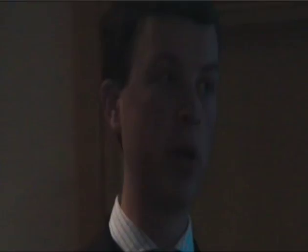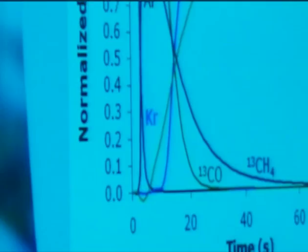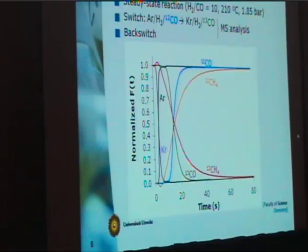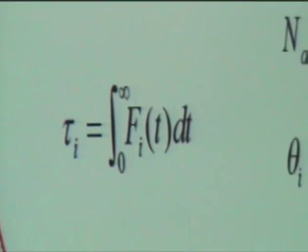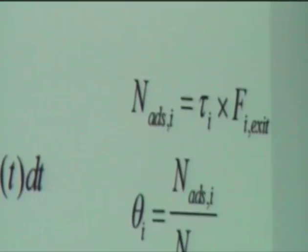Here is a typical example of how a back switch looks. You see the normalized intensities of different intermediates and compounds. Typically, you first see the exchange of inert tracers, and then, for example, the decrease of the 13-CH4 signal and at the same time the increase in the 12-CH4 signal. What we learn from this is that we integrate between the areas of the inert tracer and the 13-CH4 signal, and this integrated area gives us the residence time of the intermediate leading towards 13-CH4 — in other words, the residence time of CHX. If you then multiply this residence time with the total exit flow concentration, you get the total number of adsorbed species. Dividing by the total number of cobalt surface atoms gives the surface coverage.